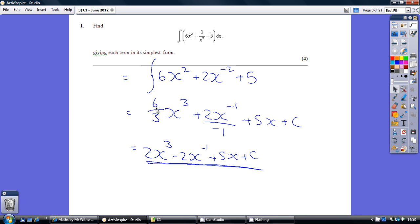So then just tidy it up. 6 over 3 is 2 and 2 over minus 1 is minus 1. And there's your final answer.